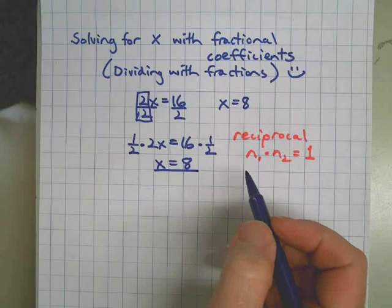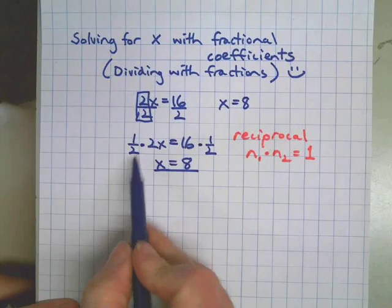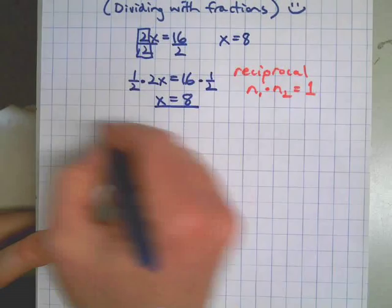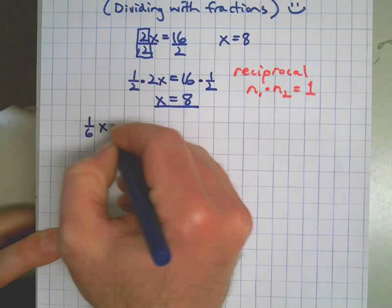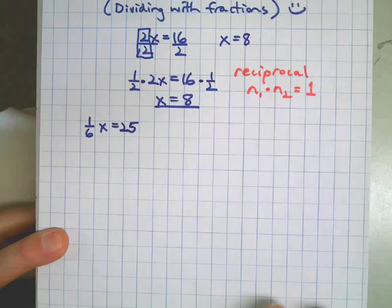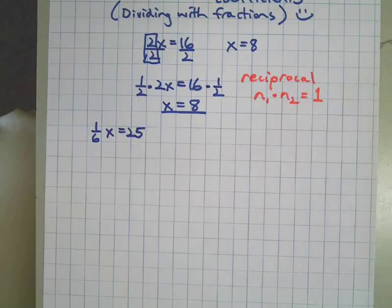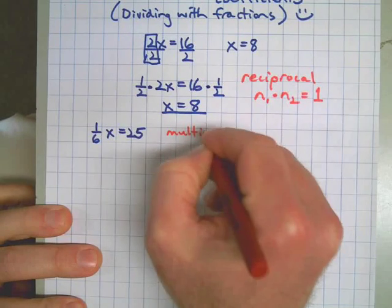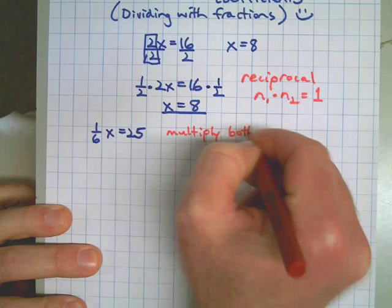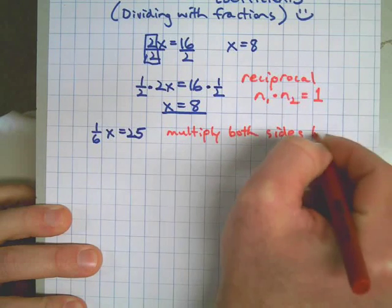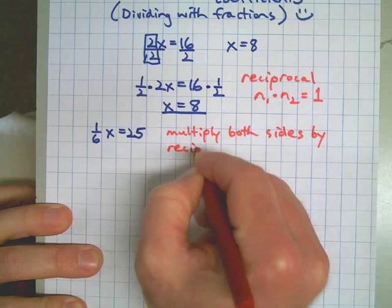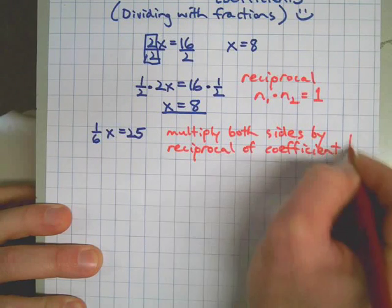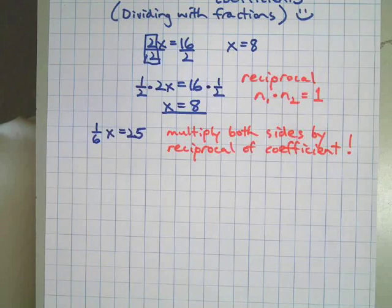So we already know how to do this — it's not really a new thing. We've been doing it before. Now let's check it out with a real fraction. Let's take 1/6 x equals 25. Here are the steps, and here's the rule in red: multiply both sides by the reciprocal of the coefficient. That's it. If you can remember that, you'll be dialed in every single time.